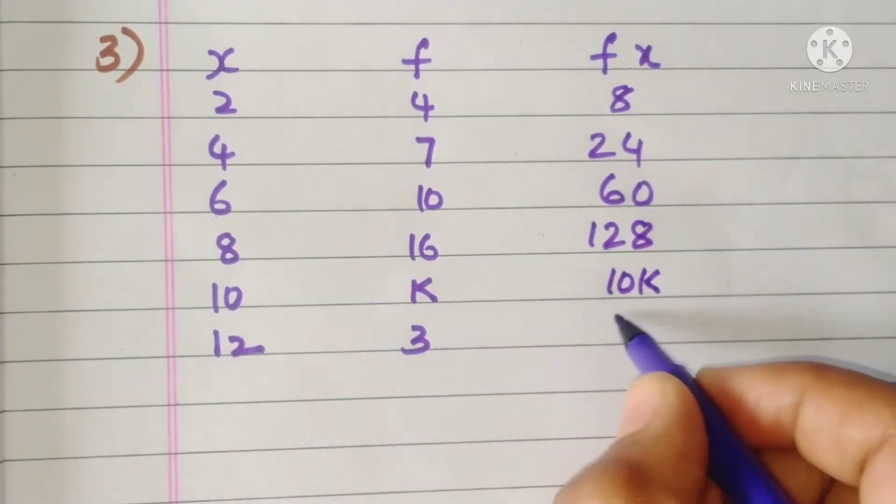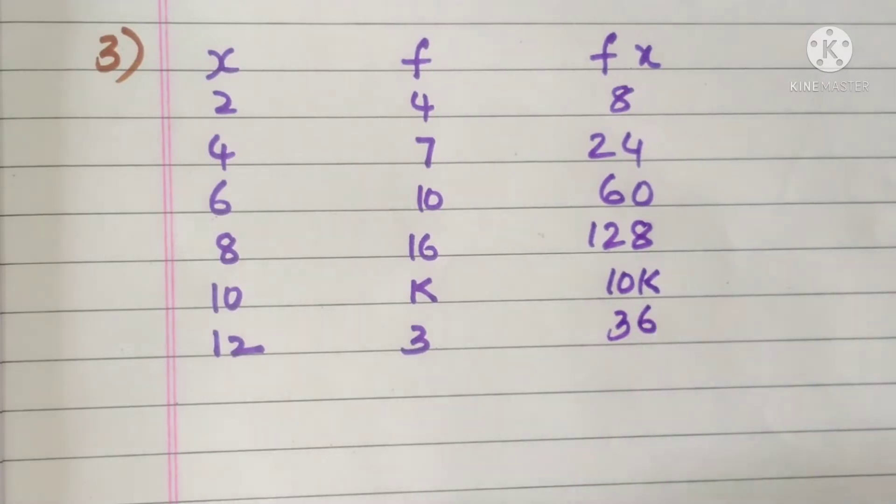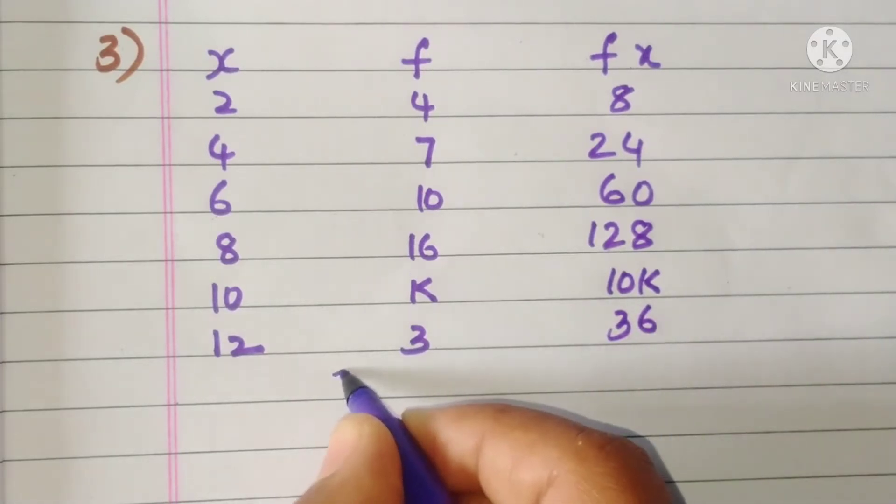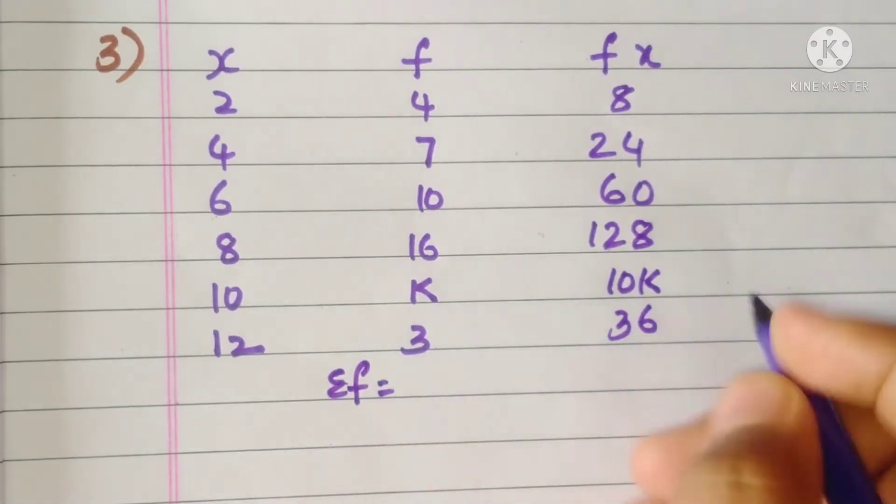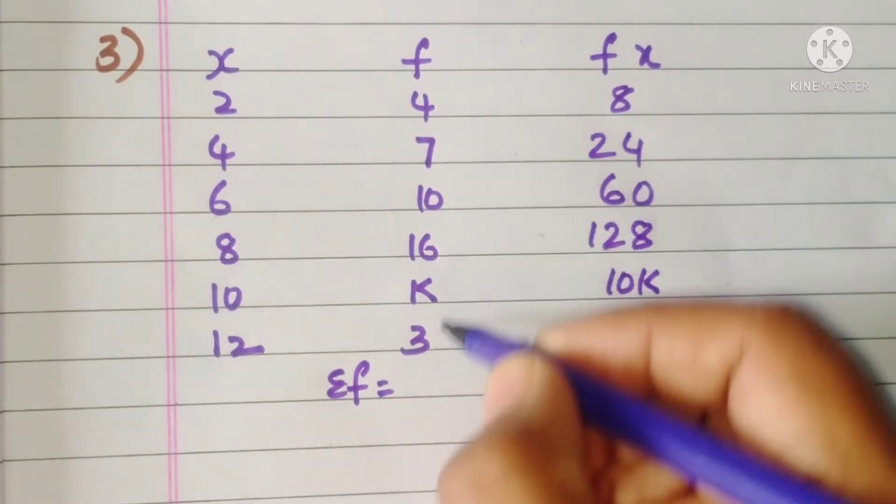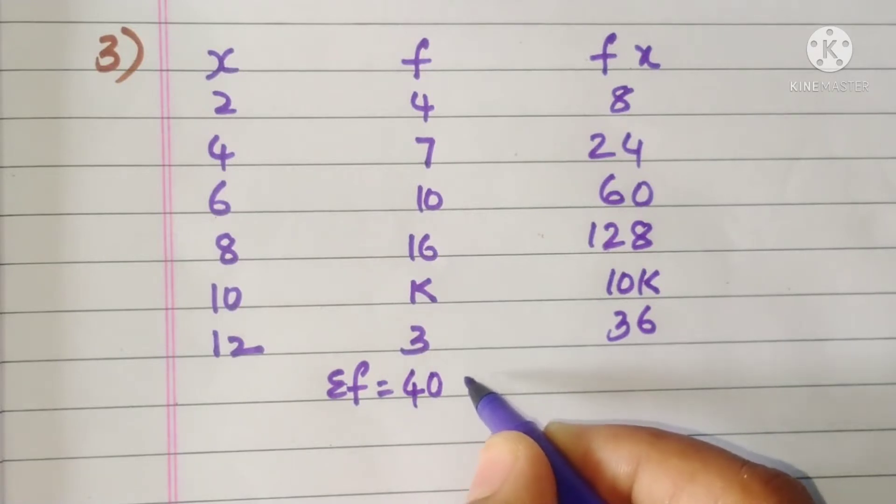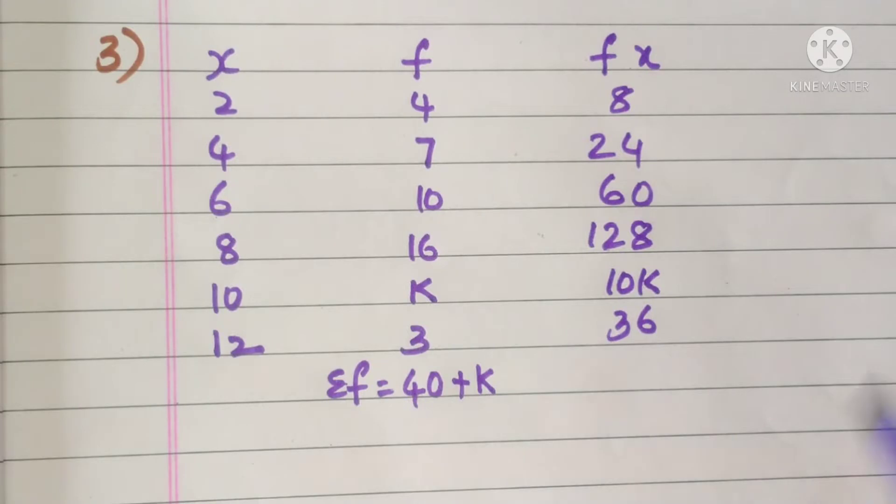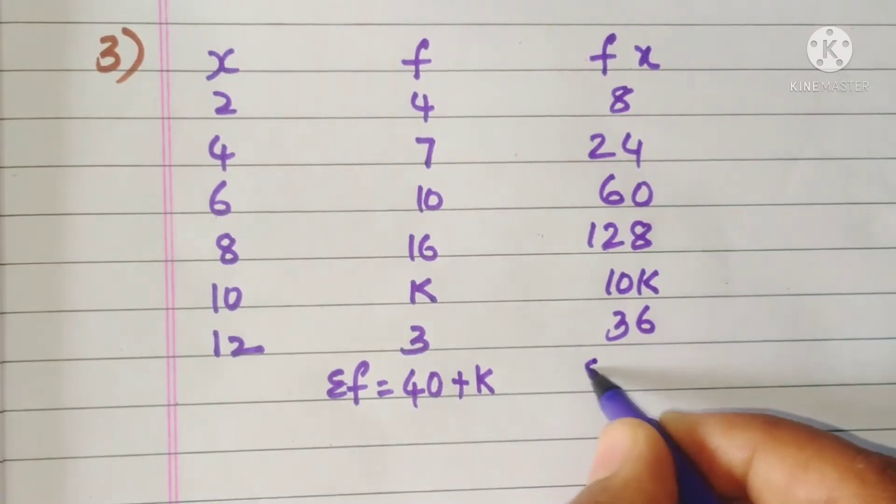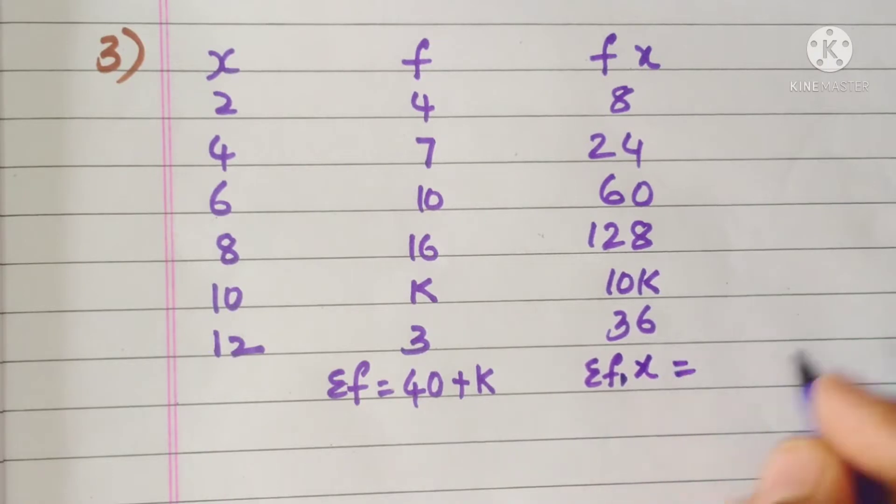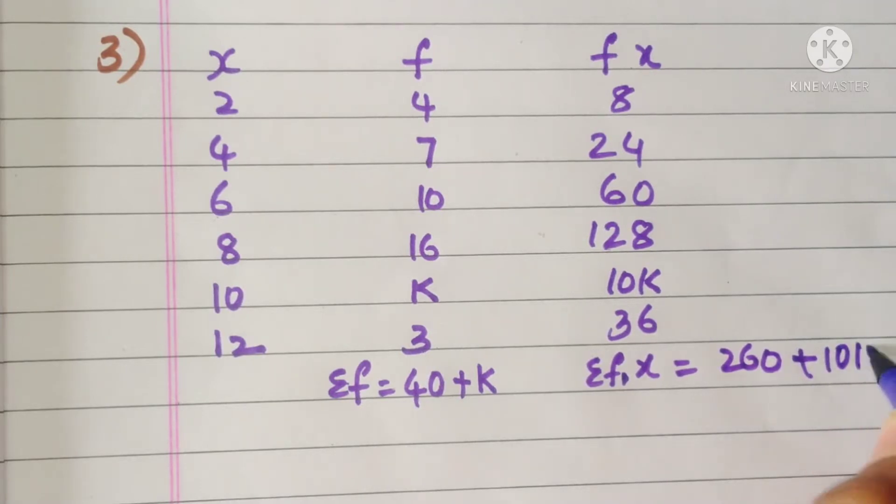10 into k is 10k, 12 times 3 is 36. Okay, so if we add this, sigma f, we get—k is there—so after adding all the numbers we will get 40, so this is 40 plus k. Sigma fx is equal to 260 and one variable 10k.